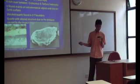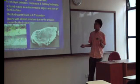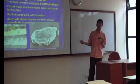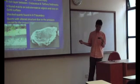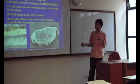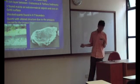Looking at the geological evidence, one key piece is the iridium-rich clay layer found between Cretaceous and Tertiary sediments. Iridium is a rare element commonly found on extraterrestrial objects and is very rare on the Earth's surface, suggesting it is a result of dust thrown out by the impact. There is also shocked quartz found at the K-T boundary — shocked quartz is quartz with an altered structure due to the extreme pressure caused by the impact.